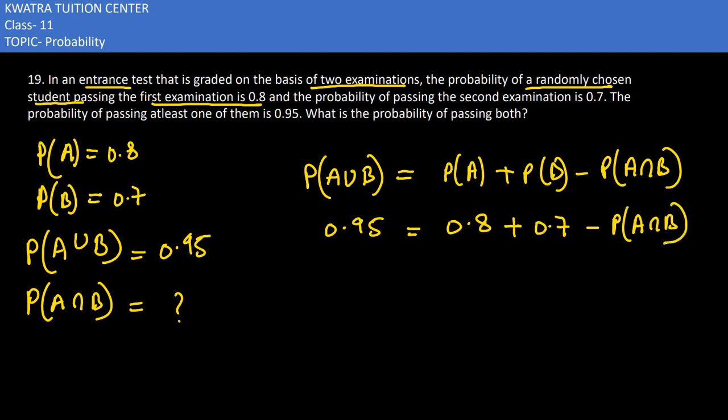Then last is A intersection B. If you add 0.8 and 0.7, the value you will get is 1.5. 1.5 minus 0.95, you will get 0.55 as the value. The probability that both pass is 0.55.